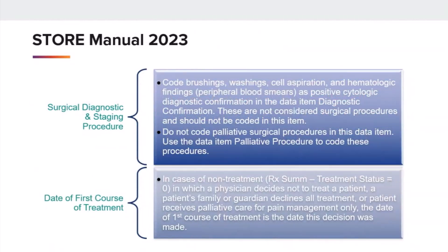Sometimes in metastatic lung cases with Plurax catheter, we might wonder if it is supposed to be documented as a surgical diagnostic and staging procedure. The STOR manual guides us that any positive cytologic or palliative surgical procedures are not documented in the surgical diagnostic and staging procedure data item. The first course treatment data item also provides instruction that we document a date there when the patient might receive palliative care for pain management only.